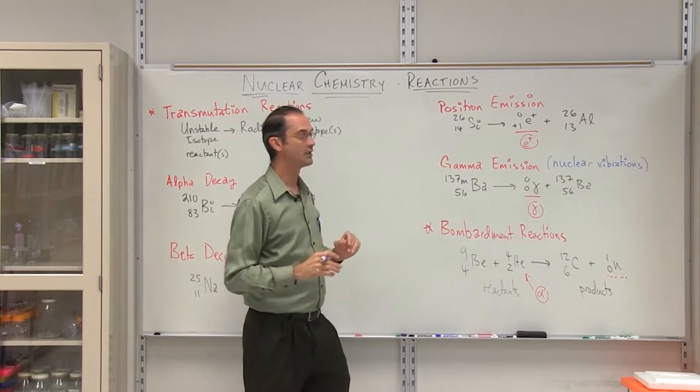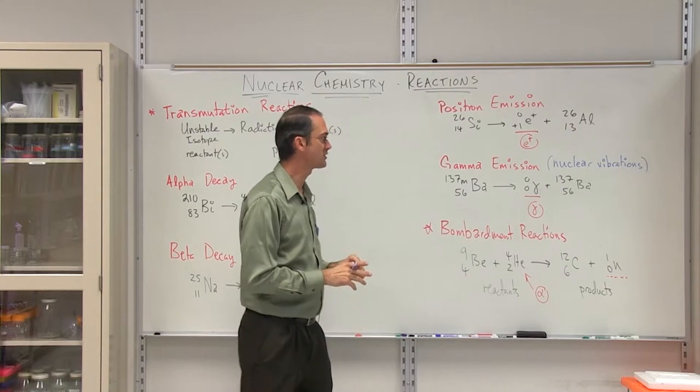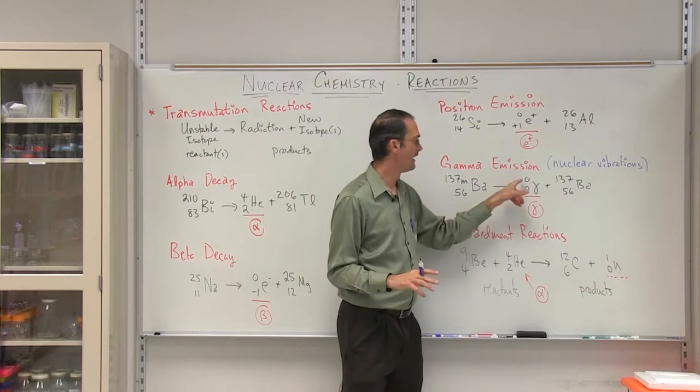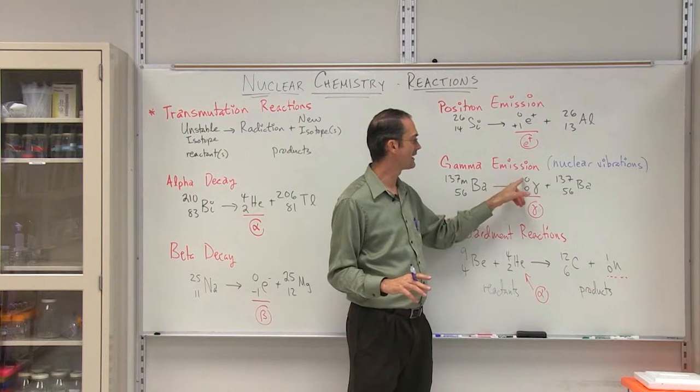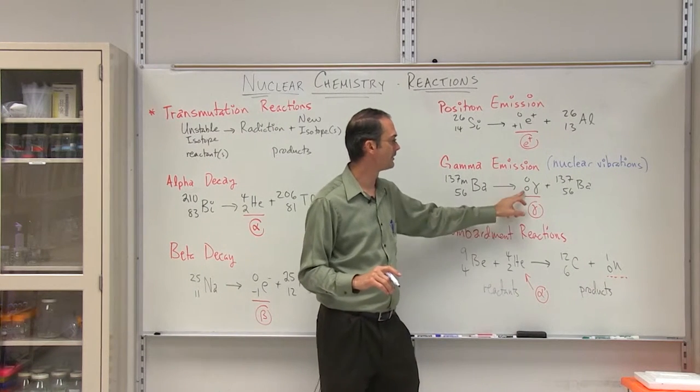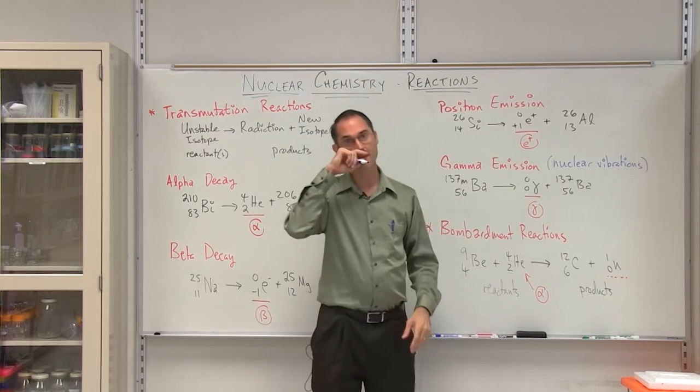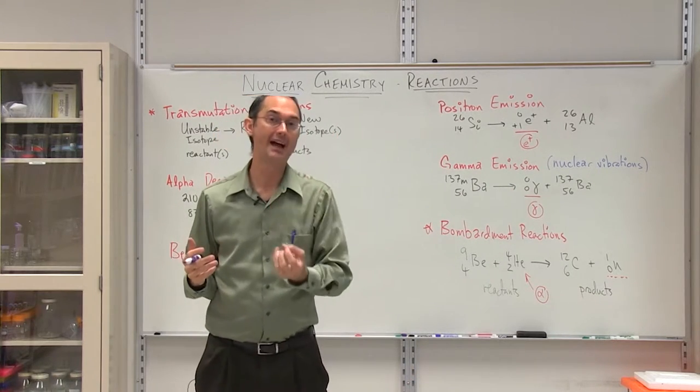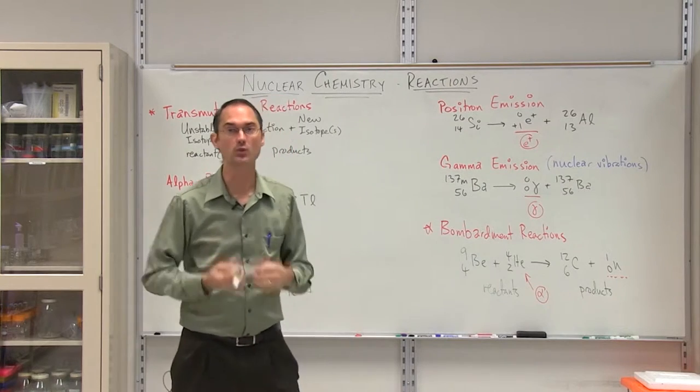Here we go. Gamma ray emission is the fourth type of transmutation reaction we'll take a look at. Now, I want you to, first of all, before we get to the reaction, note that the atomic mass and the atomic number and the atomic mass number of the gamma is zero. It doesn't have mass.